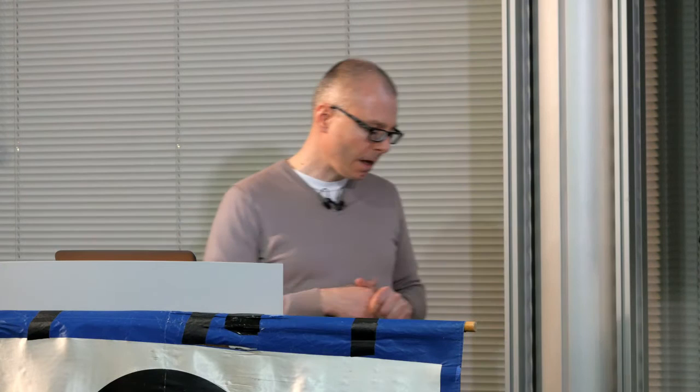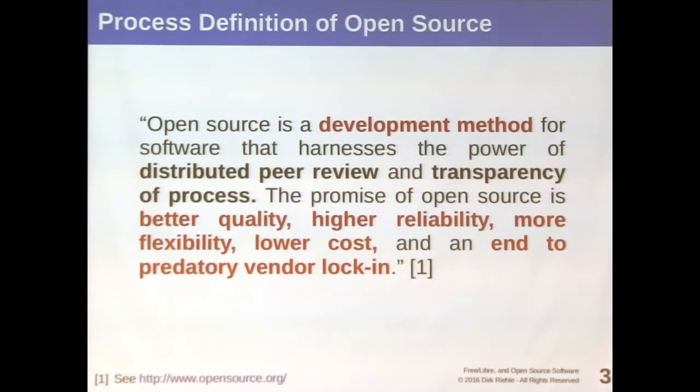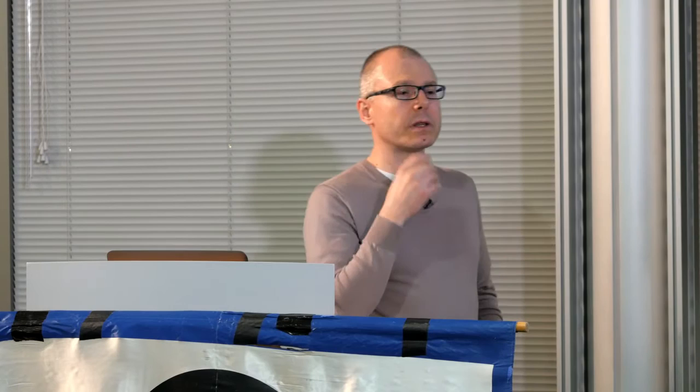Working towards our topic tonight: project communities and the five stages of open source volunteering. The first step — which most of you have probably taken — is to realize that open source is not just about the licenses. It's not the copyleft license or permissive license only. That's an important part of open source, but open source has a second part of its definition: it's a particular open process of collaboration. If you go to the website of the Open Source Initiative, you'll find this additional definition that open source is a development process of particular qualities — with promises like better quality, higher reliability, and of course an end to vendor lock-in.